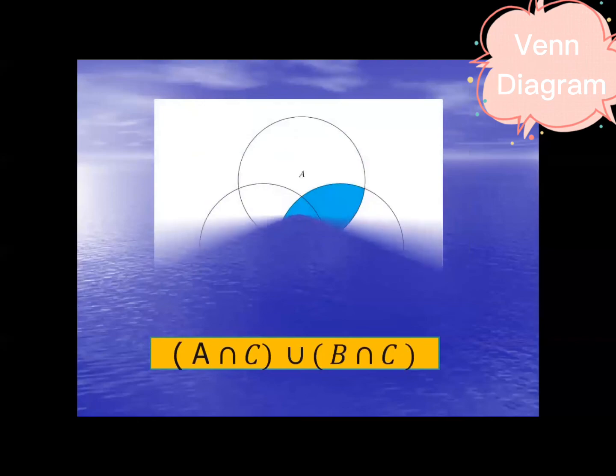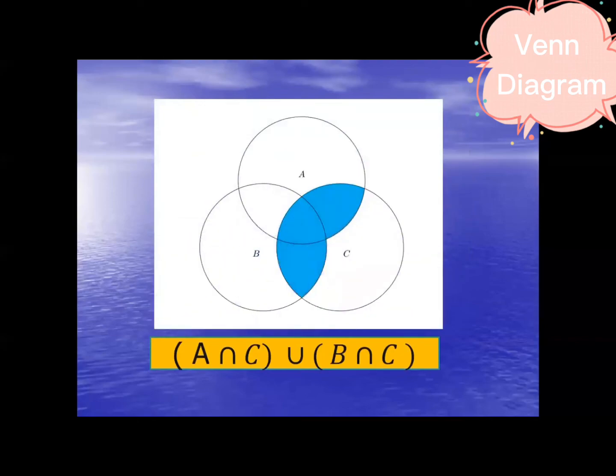What about this one? The shaded region here, color blue. So this is A intersection C union with B intersection C. The shaded region is A intersection C union B intersection C.